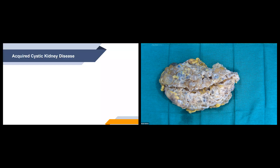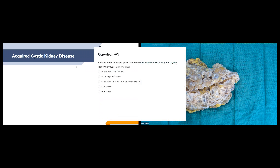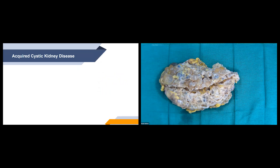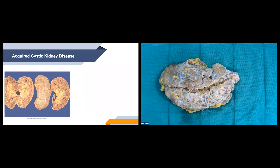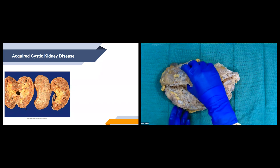Now acquired cystic kidney disease — and we'll put up our next polling question: which gross features are associated with acquired cystic kidney disease? The correct answer is D — both A and C. They are usually normal size or sometimes even smaller than a normal kidney and do contain multiple cortical and medullary cysts. Here's an image showing how they look differently than ADPKD and ARPKD kidneys — the cysts are a bit smaller than those typically seen in autosomal dominant disease.